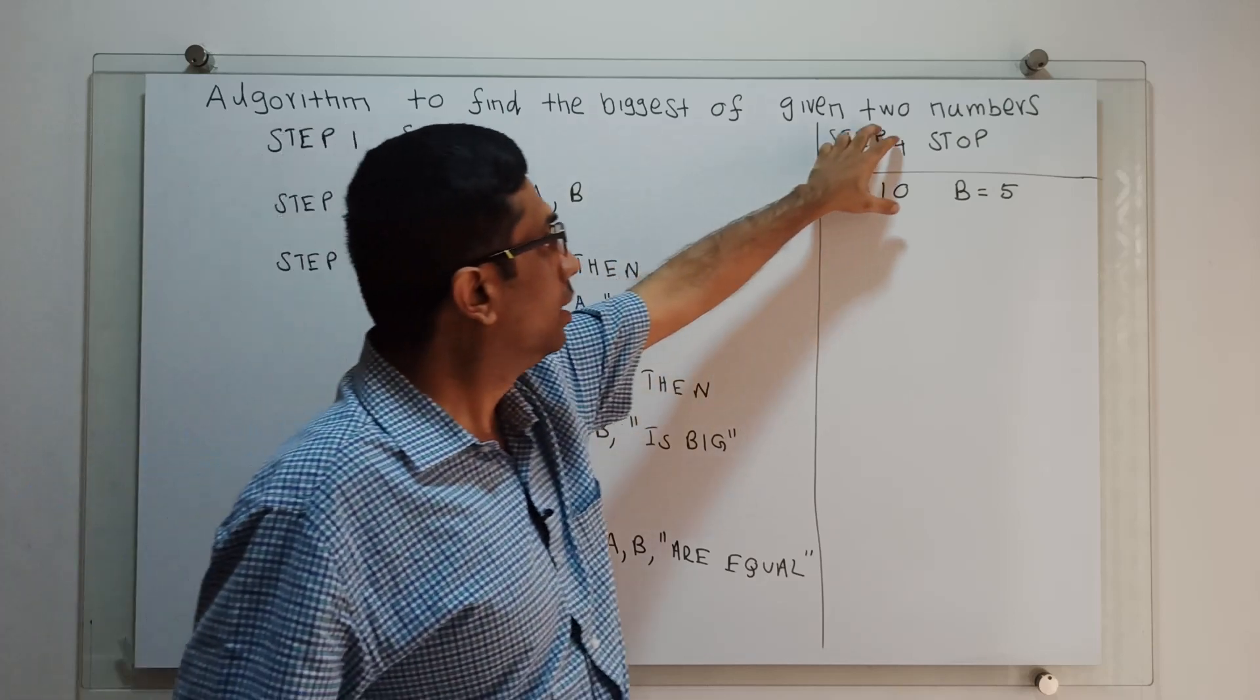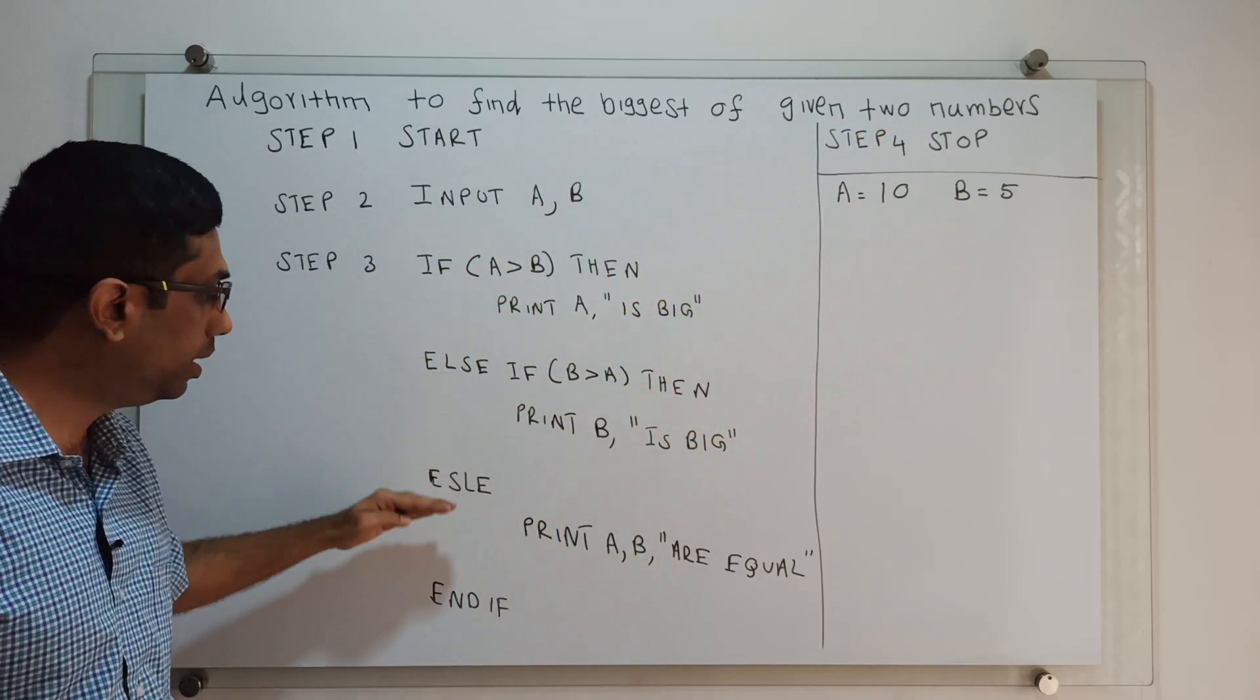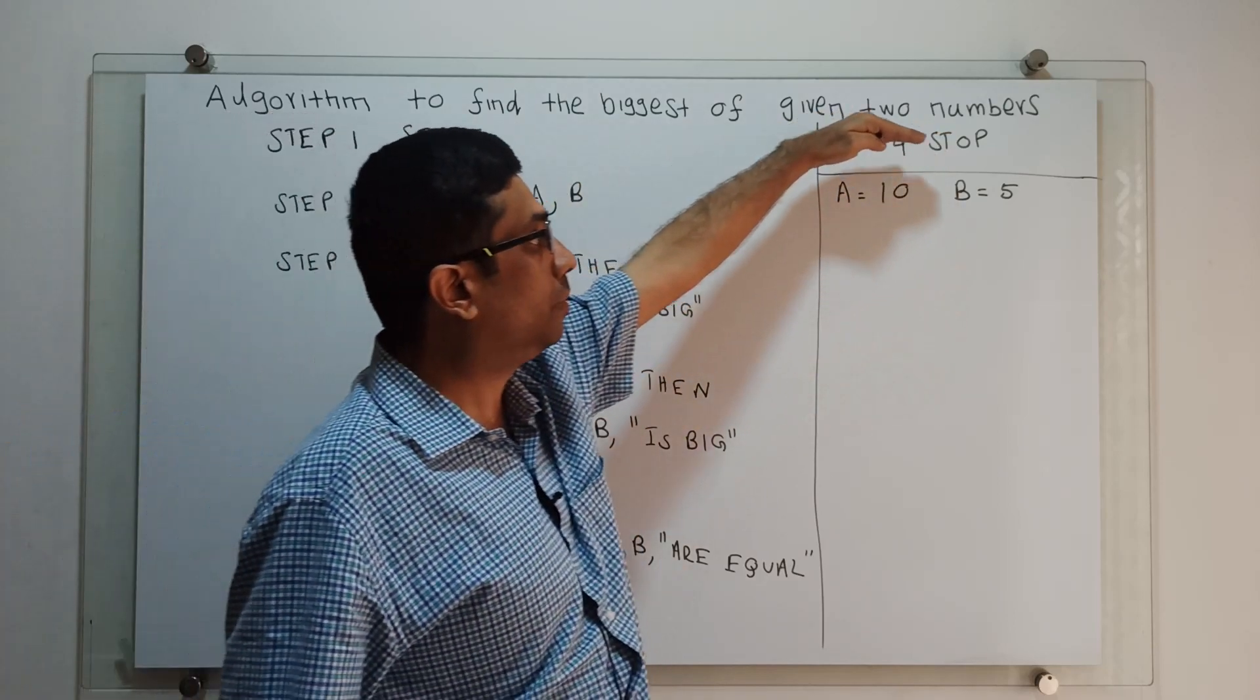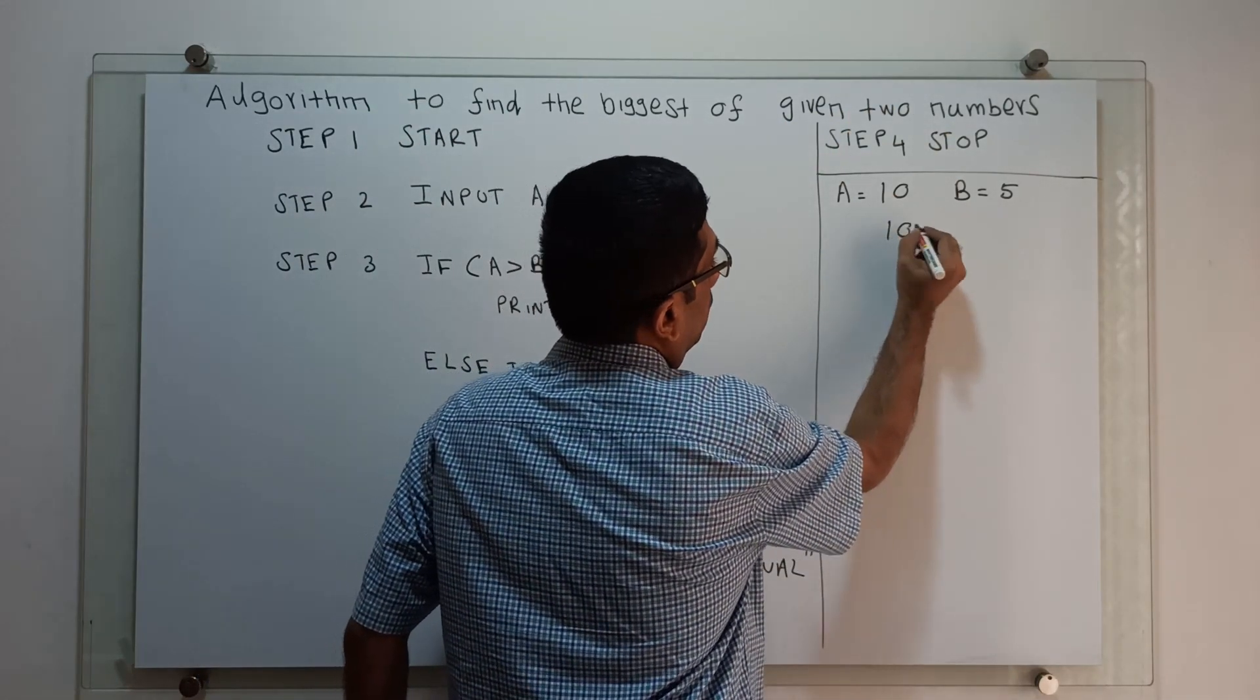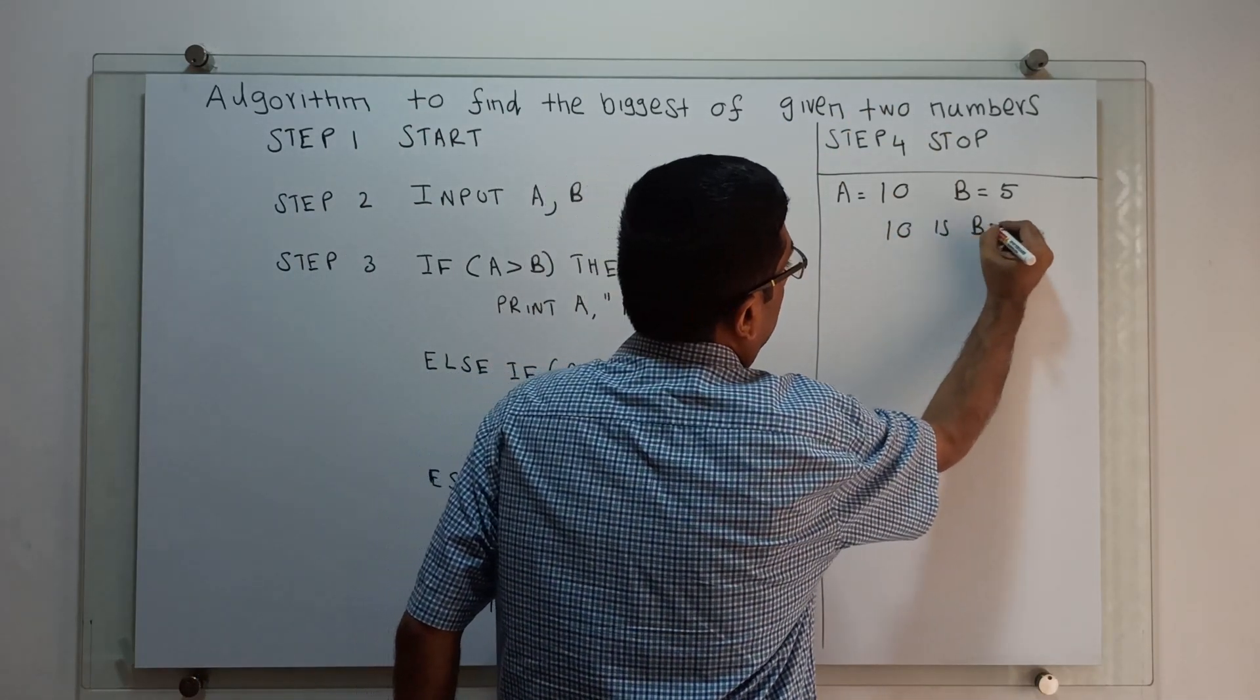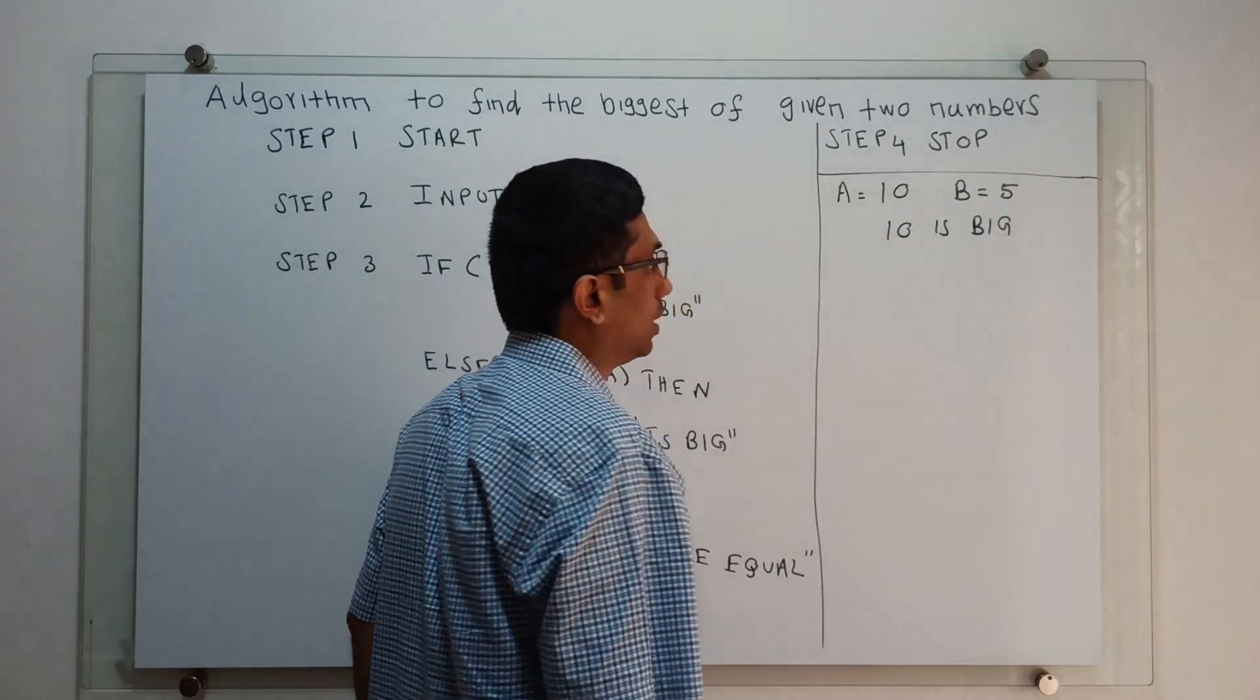After that, the control will come to the statement next to the if-else block. That will come to stop. The algorithm will stop. So the result is: A is 10, then 10 is big. This is my result.